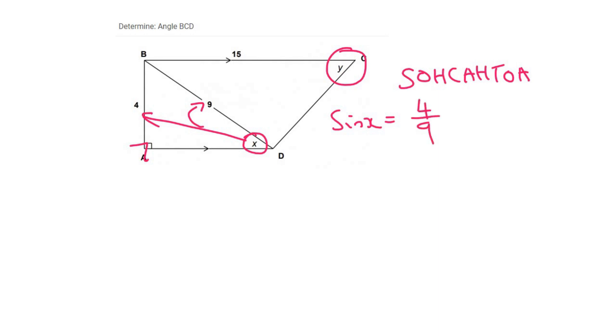Remember, if it's a right angle triangle, you can use these formulas. I would then say shift sin, and that's going to give me 26.39 degrees.